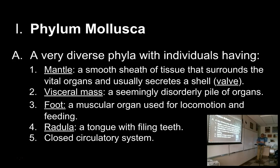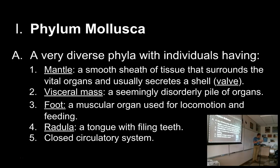A mantle is a smooth sheath of tissue that surrounds the vital organs and usually secretes a shell. Outside of biology, the word mantle means like a cloak — a poncho, something you'd throw over the top of you to keep the weather off. That word, that garment, was used as the name for this sheath of tissue. It doesn't hug the animal tightly; it's kind of just thrown over the top, sitting fairly loosely over the vital organs.